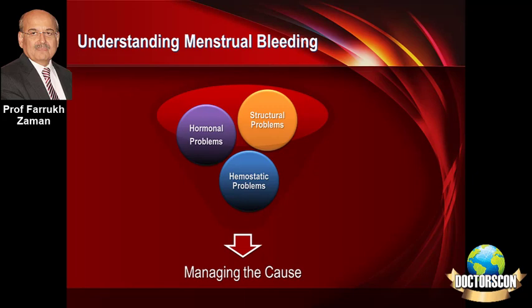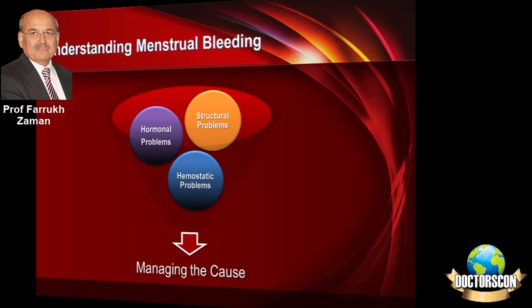If we group them into still fewer areas, there could be hormonal problems, structural problems, and in a small minority — particularly in younger girls — there could be hemostatic problems. So hormonal, structural, and hemostatic problems, and we need to identify which category the problem falls into and then manage accordingly.